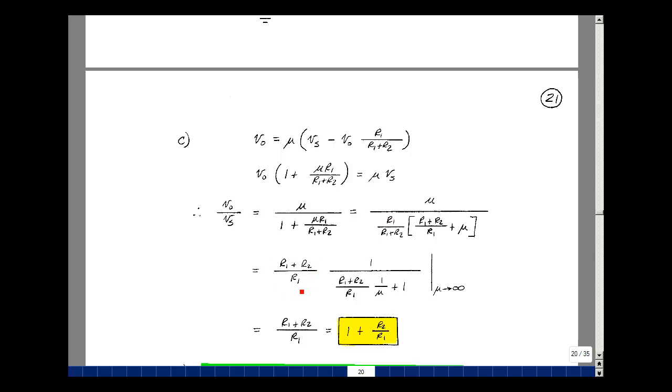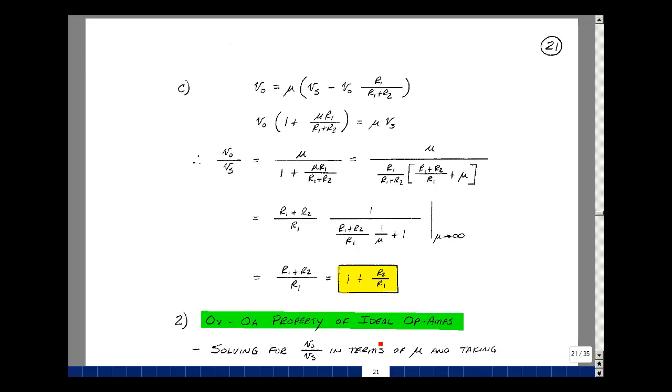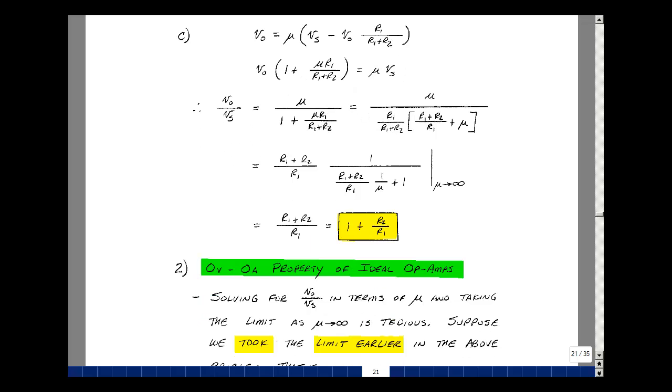Now take the reciprocal of that, and you get R1 plus R2 over R1. And then bring also mu into the denominator. So multiply the numerator and denominator by 1 over mu. Now if we take the limit as mu goes to infinity, then this term will be divided by a huge number. What that means then is that this term will drop out, and we just simply have R1 plus R2 over R1.